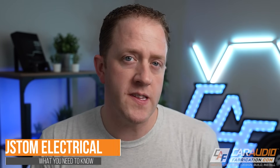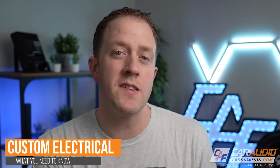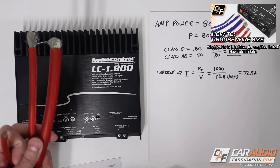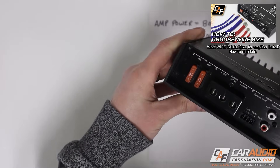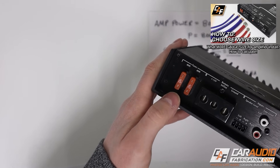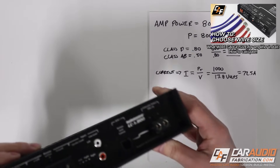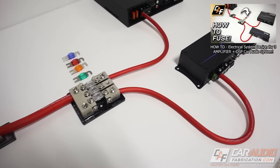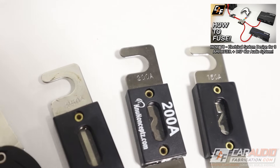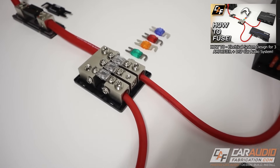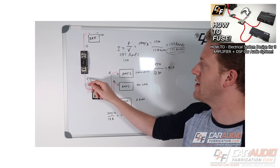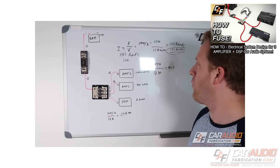Next, we want to fully understand how to plan the electrical system for all of the car audio gear. This includes topics like how to choose the right wire size, which involves calculating the amount of current the wire will need to carry to correctly power the amplifiers. We also need to know how to choose our fuse size — a fuse that is too small will blow and not allow the system to play, and a fuse that is too large will be unsafe because it won't blow when it's supposed to in order to protect the system.